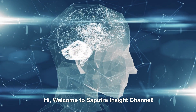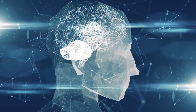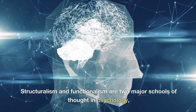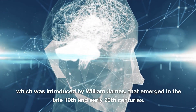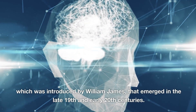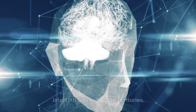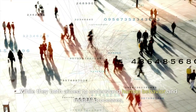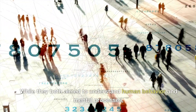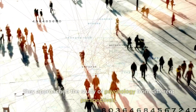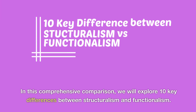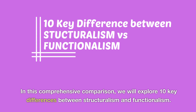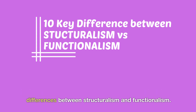Welcome to Saputra Insight Channel. Structuralism and functionalism are two major schools of thought in psychology, which was introduced by William James, that emerged in the late 19th and early 20th centuries. While they both aimed to understand human behavior and mental processes, they approached the study of psychology from different perspectives. In this comprehensive comparison, we will explore 10 key differences between structuralism and functionalism.